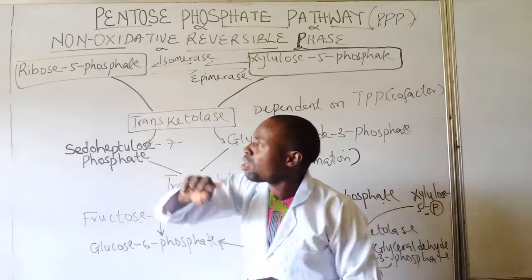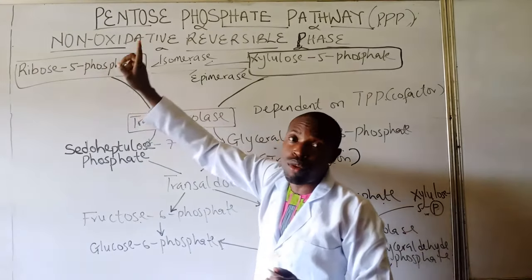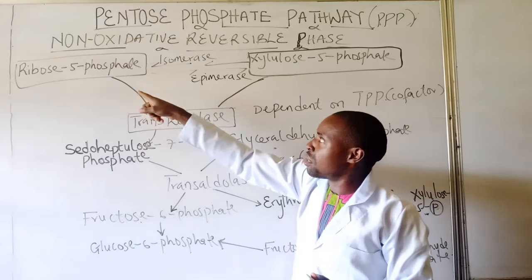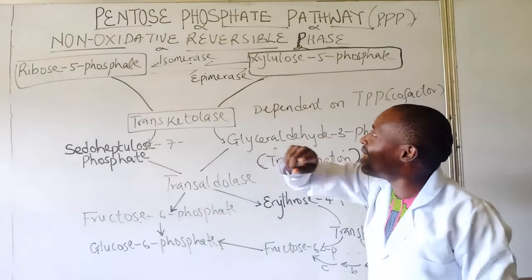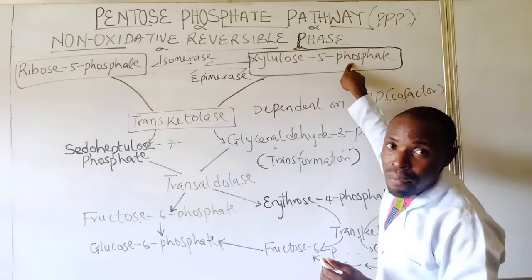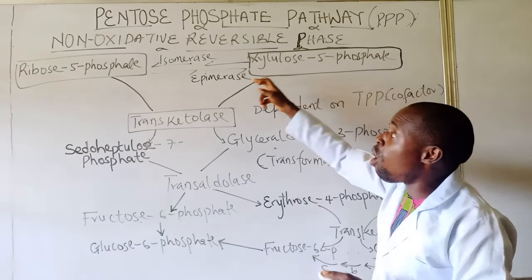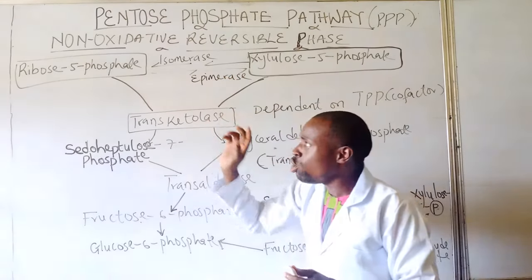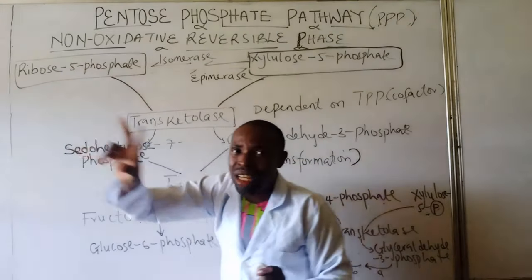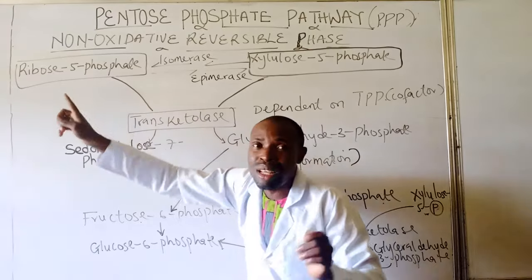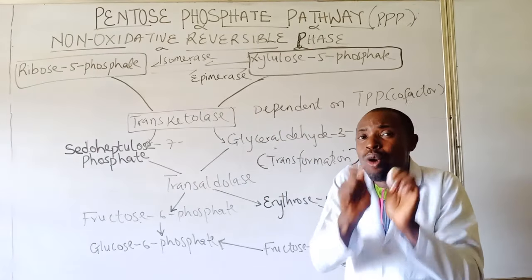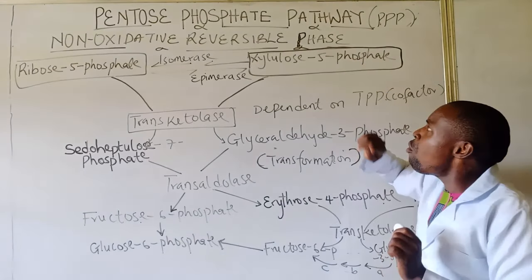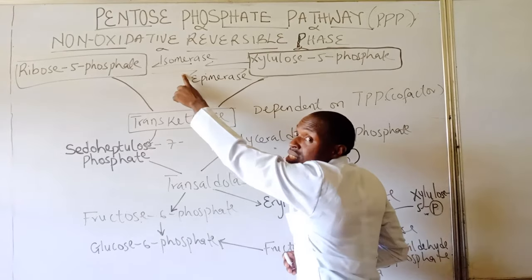In our previous video we talked about how ribulose-5-phosphate is formed. That ribulose-5-phosphate is isomerized, and when that happens it is then converted to xylulose-5-phosphate by the enzyme which we call the phosphopentose epimerase. Two molecules of ribulose-5-phosphate are involved, and this will yield two molecules of xylulose-5-phosphate. This is the first step.